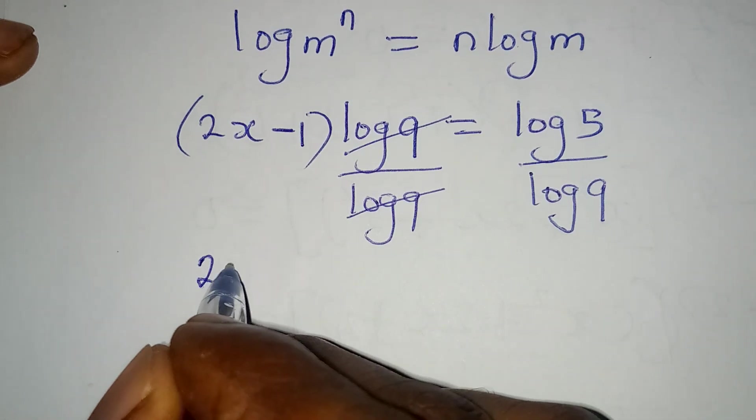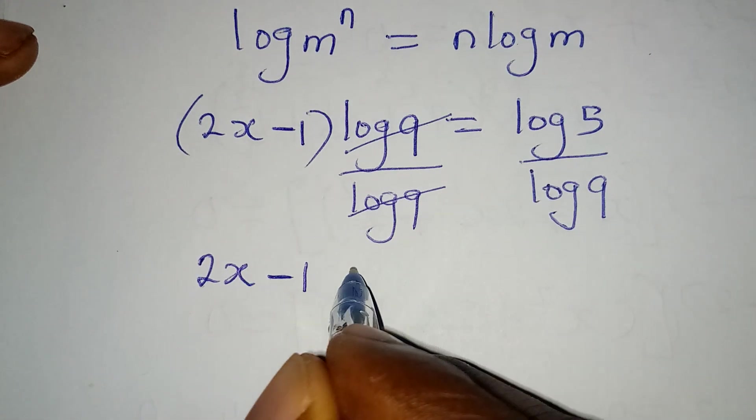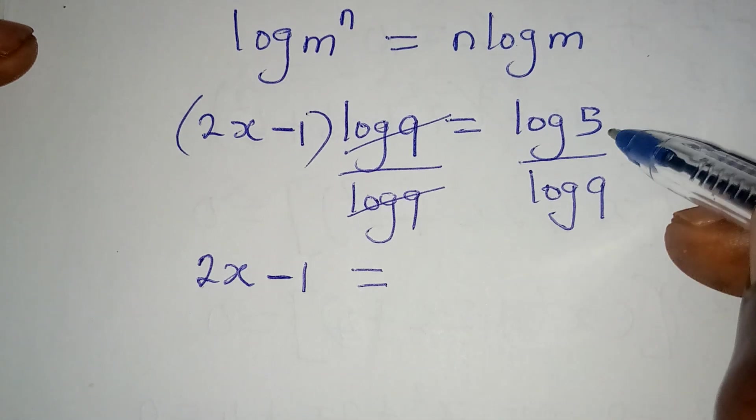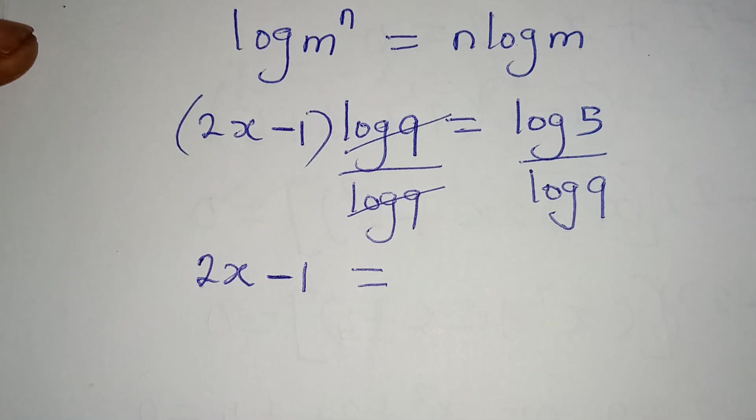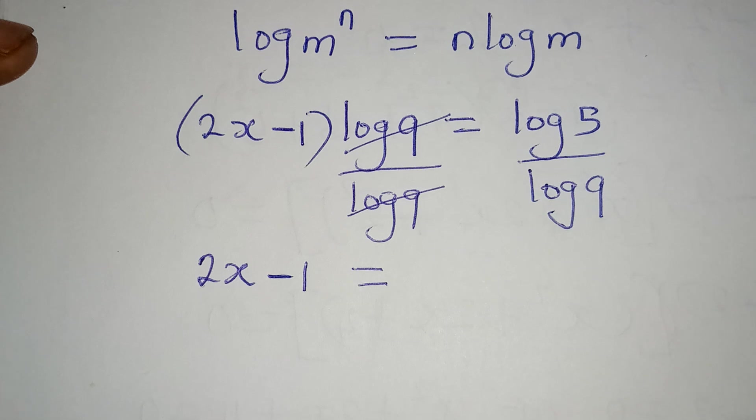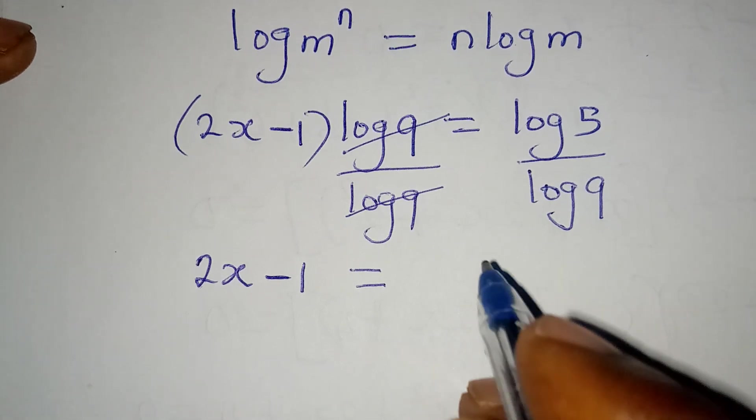And then we have 2x minus 1 to be equal to log 5 over log 9, and if you press your calculator you'll have approximately 0.73. This is an approximated figure.